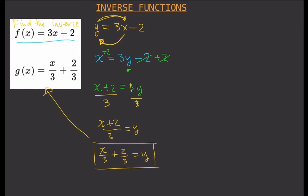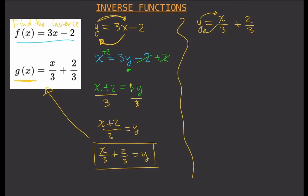Now let's try g of x equals x over 3 plus 2 thirds — let's find the inverse of that function. Again, instead of writing g of x, you write y equals x over 3 plus 2 thirds. Then you interchange the positions of x and y, giving x equals y over 3 plus 2 thirds.